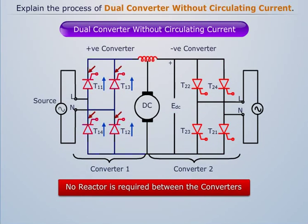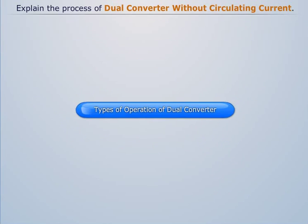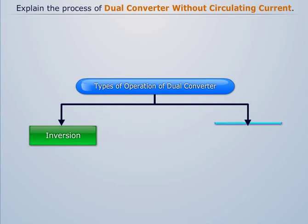Since only one conductor operates at a time and the other is in blocking state, no reactor is required between the converters. There are two types of operations taking place here, namely inversion and rectification.